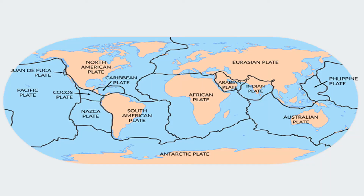Some tectonic settings of this environment are collision coasts, coasts that lie along convergent plate boundaries; trailing edge coasts, plate embedded coasts that face a spreading center; and marginal sea coasts, coasts that are in semi-protected environments.